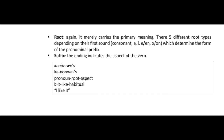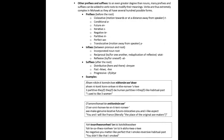The root merely carries the primary meaning of the verb. There are five different root types depending on their first sound — a consonant, R, I, E or A, and O or N — which determine the form the pronominal prefix will take. The suffix indicates the aspect of the verb; for example, the habitual aspect suffix signals that an action takes place habitually. Verbs are extremely complex in Mohawk, as they all have several hundred possible forms.